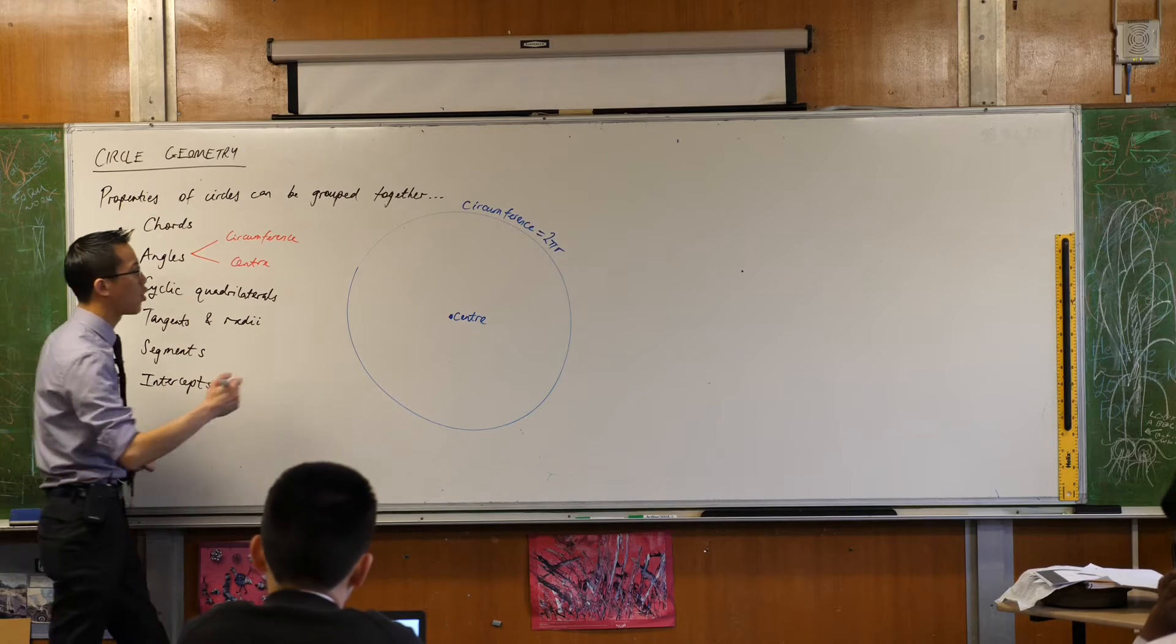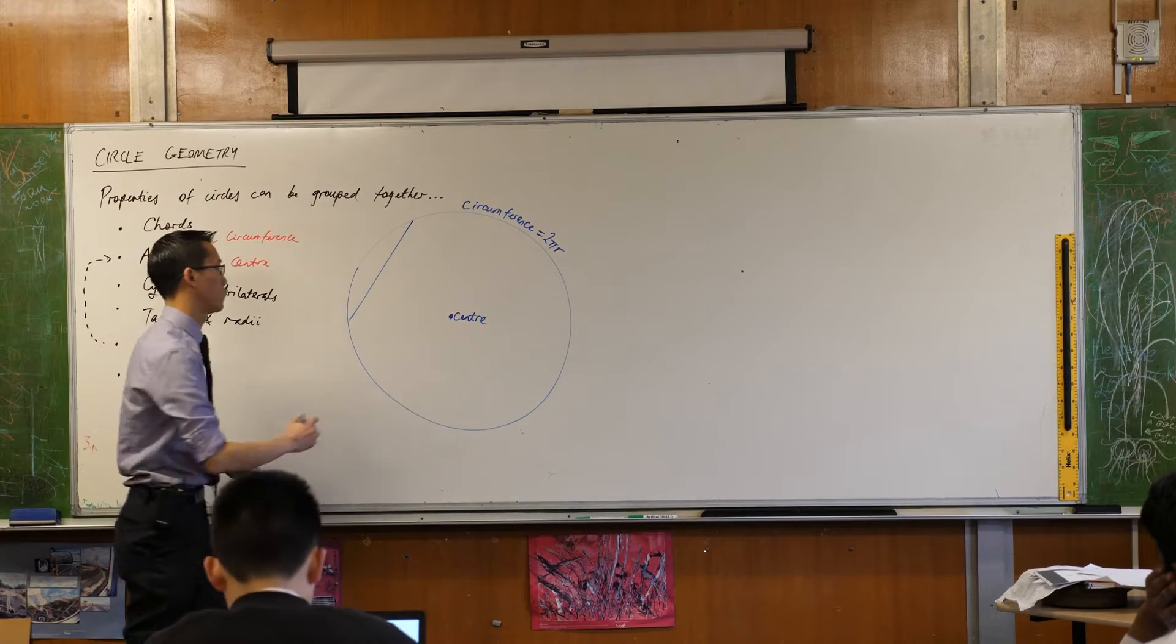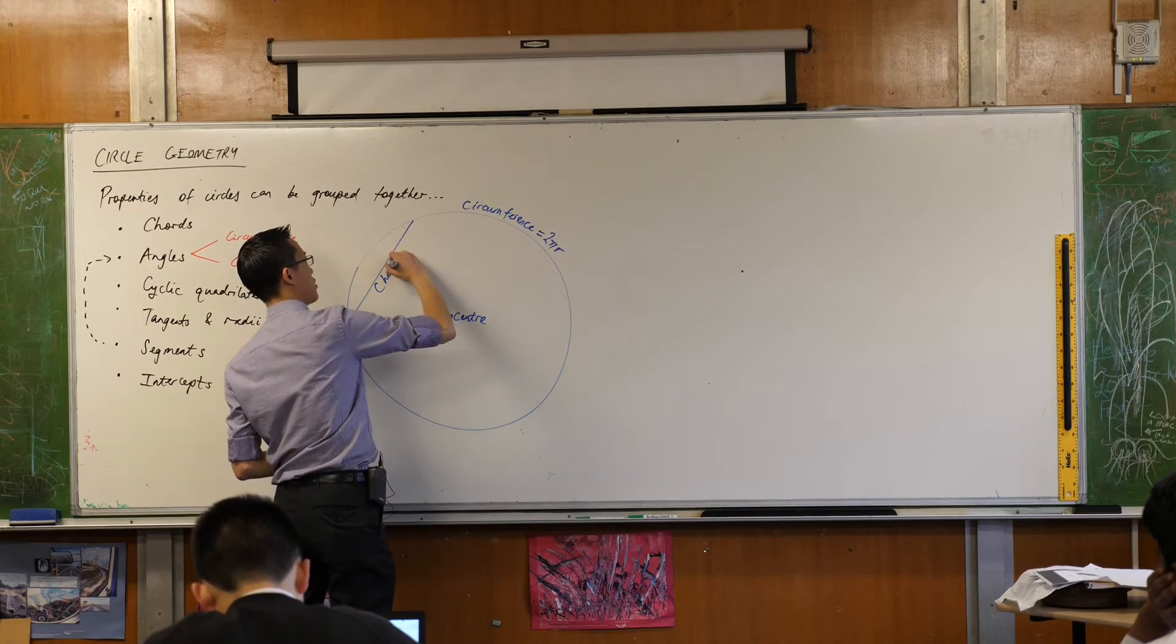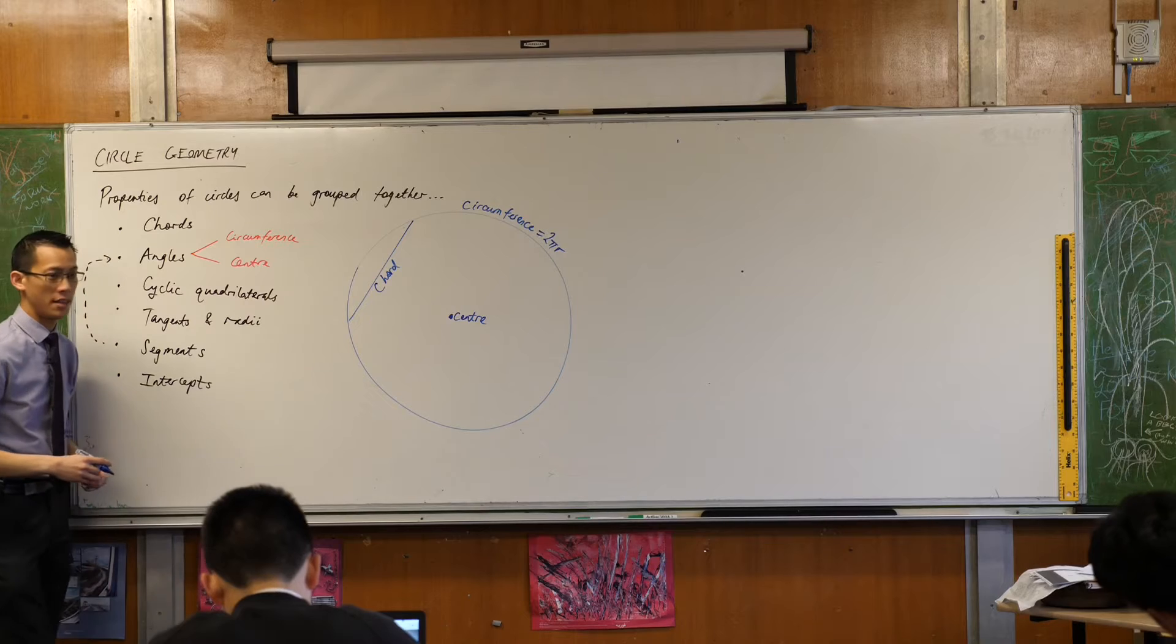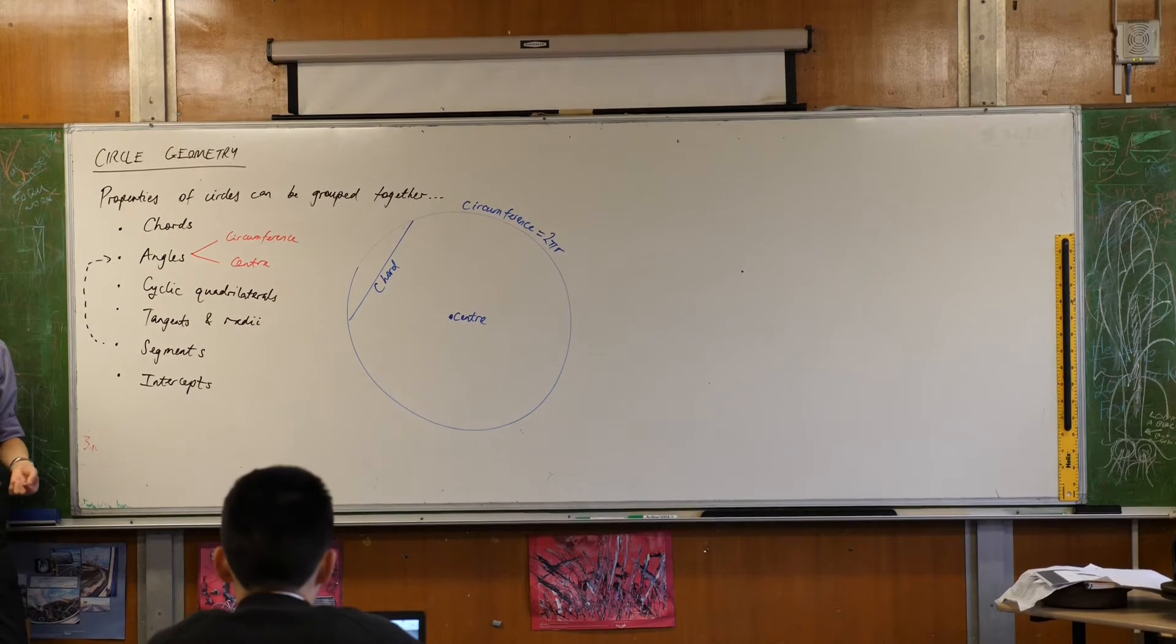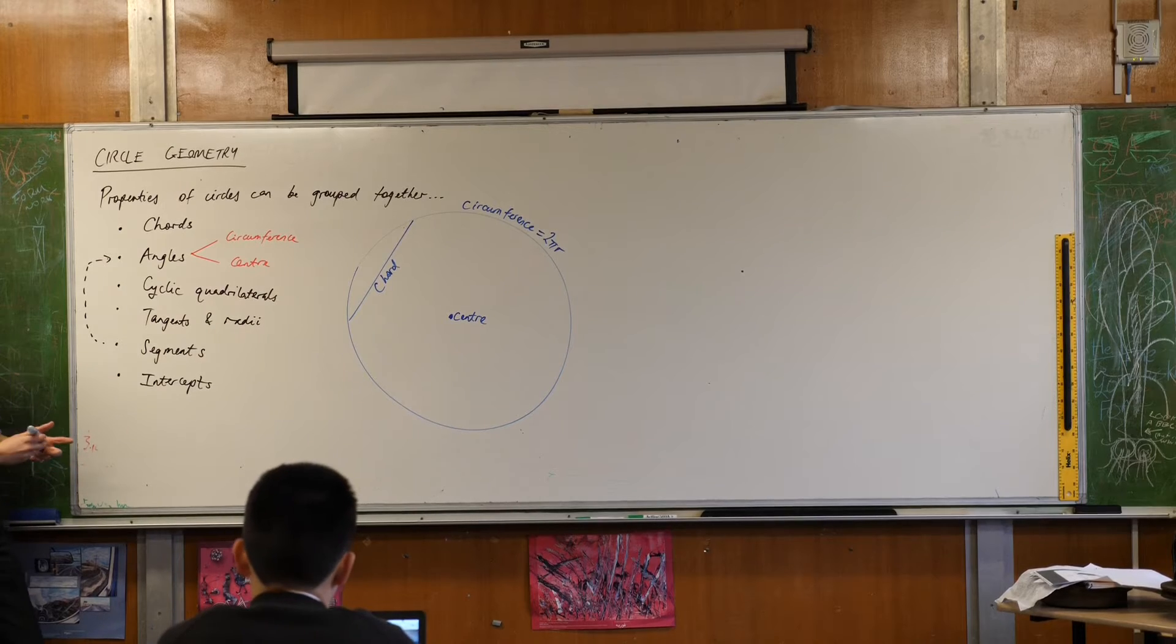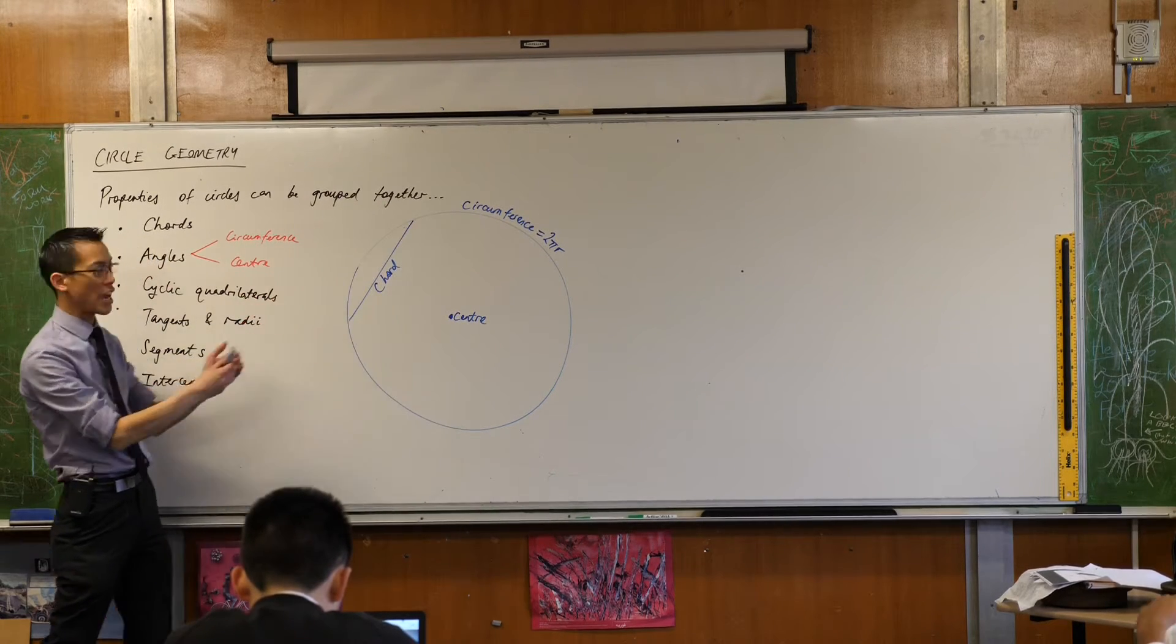Center, circumference, those are the most important features. Then let's just start to go through this list. So chords. What's a chord? Here's a chord. As I mentioned, the chord joins two points on the circumference. You can actually also have chords of parabolas and chords of hyperbolas as well, and all they mean is it's an interval that joins two points on said shape.